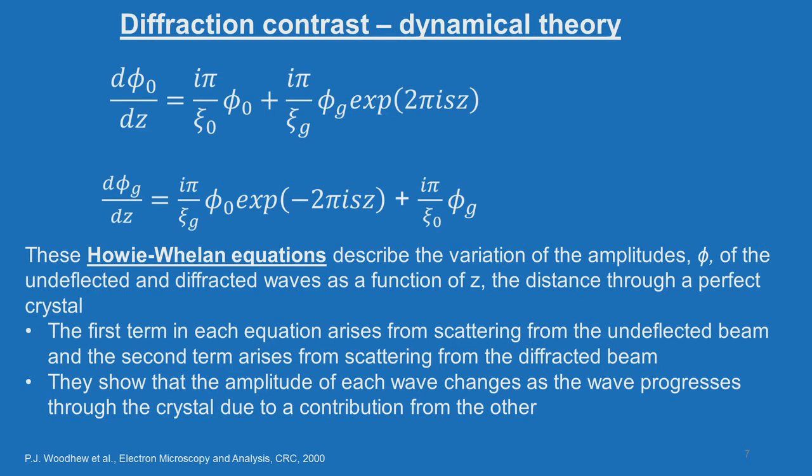In kinematic theory, only one diffracted beam and one transmitted beam are considered, with no interaction between them. In dynamic theory, these two beams interfere with each other and produce an effect. The equations we are examining describe the interaction of the transmitted beam and diffracted beam and what it conveys.